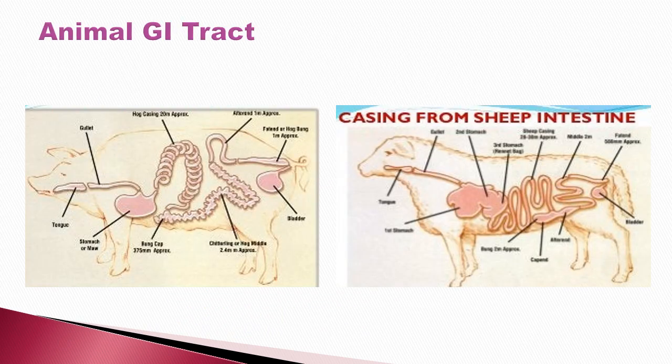Here is a review of the GI tract. On the left side it is from pig and on the right side from sheep and goat. Sheep and goat intestines are most commonly used for making sausage casing. The GI tract starting from the esophagus to the rectum — the entire portion can be processed into casing.